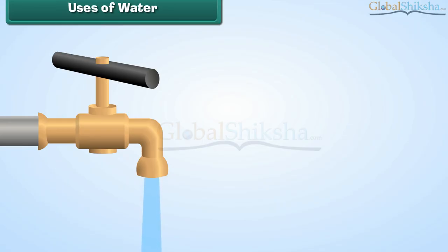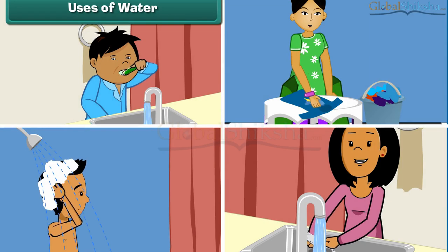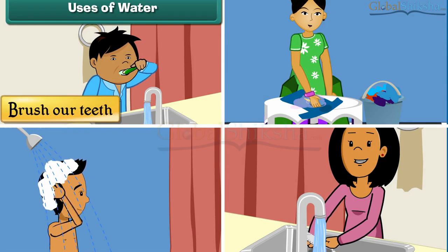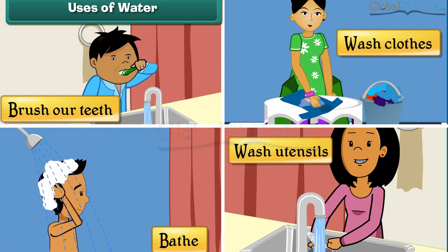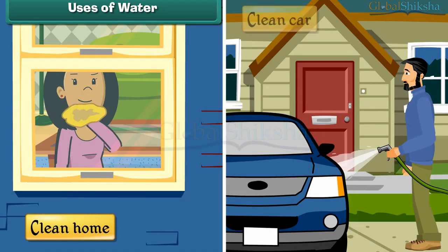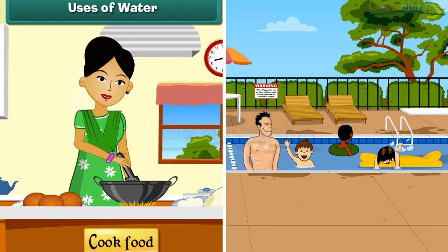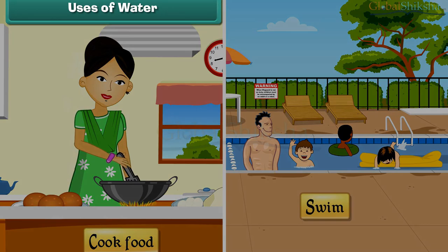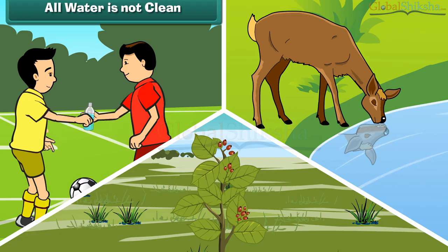Water has many uses. Most importantly we use it for drinking. We also use water to brush our teeth, bathe, wash our clothes and utensils, clean our homes and cars, cook food, swim, and water our plants.